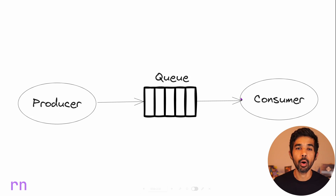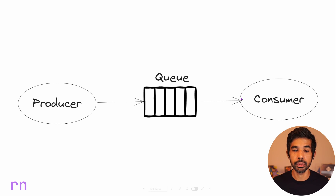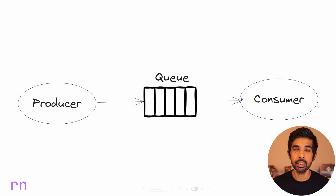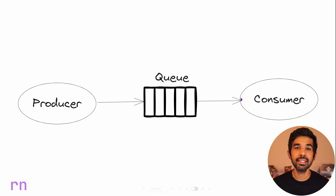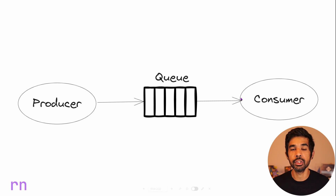Typically, when we think about a message-based application, we think about a producer, a queue, and a consumer. The producer produces the message, also known as the sender, and the consumer consumes or receives the message, also known as the receiver. The producer sends the messages to the queue and the consumer picks them up from the queue.